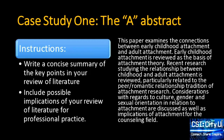So this student, based on those instructions, wrote: 'This paper examines the connections between early childhood attachment and adult attachment. Early childhood attachment is reviewed as the basis of attachment theory. Recent research studying the relationship between childhood and adult attachment is reviewed, particularly related to the peer/romantic relationship tradition of attachment research. Considerations with regard to culture, gender, and sexual orientation in relation to attachment are discussed, as well as implications of attachment for the counseling field.'